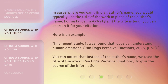In cases where you can't find an author's name, you would typically use the title of the work in place of the author's name. For instance, in APA style, if the title is long, you can shorten it for your citation. Here is an example: 'In a recent study, it was found that dogs can understand human emotions' (Can Dogs Perceive Emotions?, 2023, p. 52). You can notice that instead of the author's name, we use the title of the work, 'Can Dogs Perceive Emotions?'